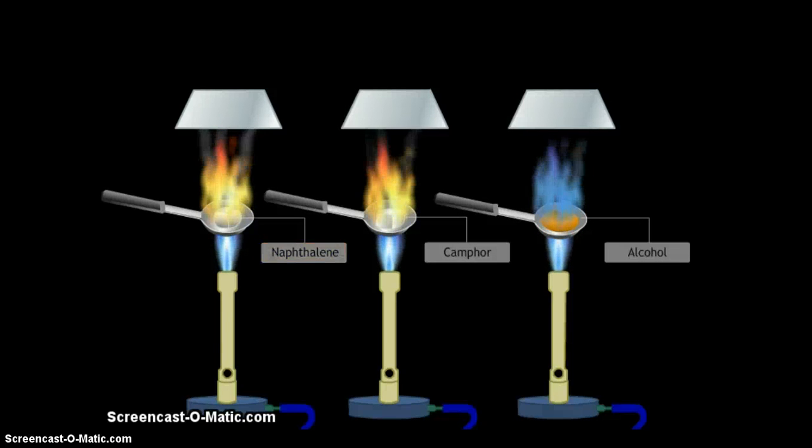Repeat this process using small quantities of camphor and alcohol. You will find that naphthalene and camphor burn with a yellow flame and give out soot, while alcohol burns with a blue flame and does not give out soot. Naphthalene and camphor are aromatic compounds, while alcohol is an aliphatic compound.